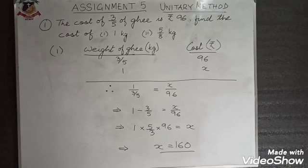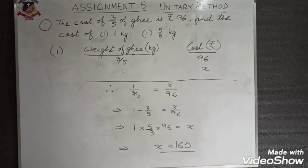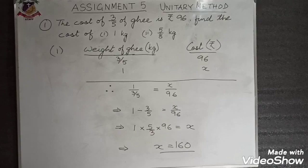Continuing with the unitary method, I'm moving to assignment number 5, taking question number 1. The cost of 3 fifths of a kg of ghee is rupees 96. Find the cost of 1 kg, and the second part says find the cost of 5 eighths of a kg.